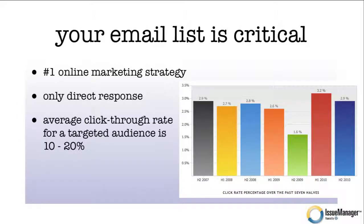Take a look at this chart on the right. What's interesting here is this shows you the average click-through rate for email across the last few years, and for all industries, all magazines, all newsletters, it runs around three percent. But what's really interesting is in the last couple of years — up to 2010 — the click-through rate has actually increased.